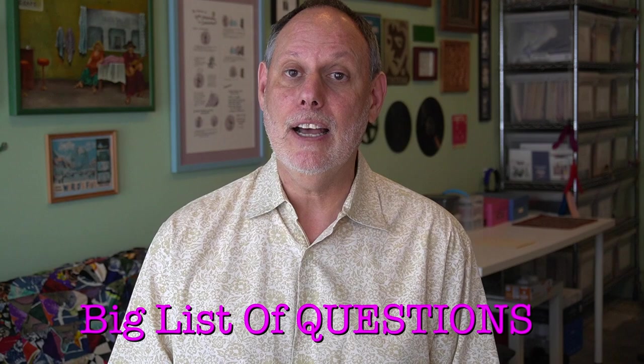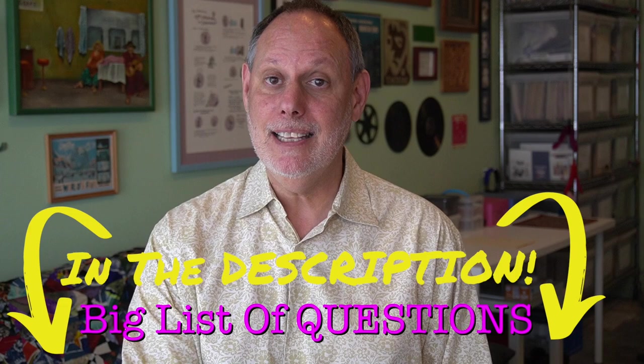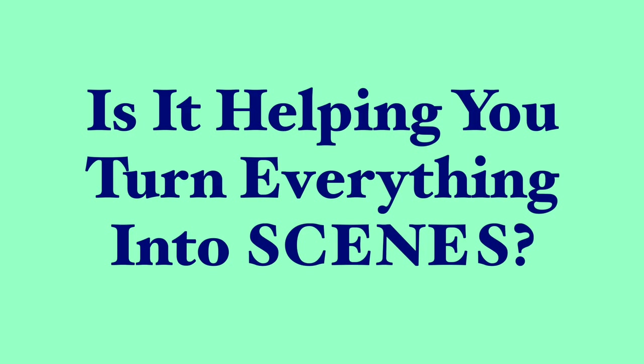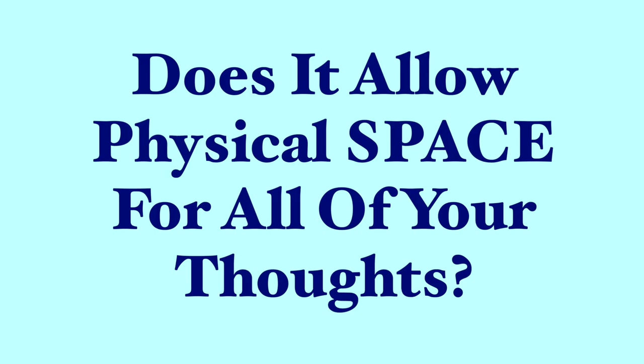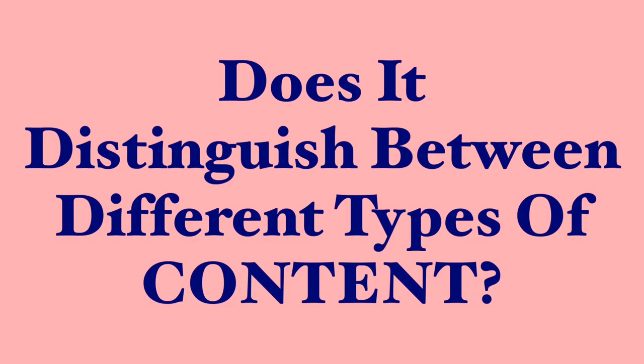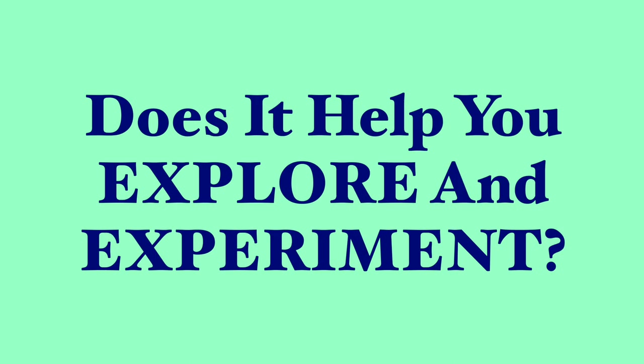To help with that, I have made a big list of questions that you can ask yourself to see if an outline system is helping you. I'm going to run through it now, but I also put it in the description so you don't have to take notes. Here we go. Is it helping you turn everything into scenes? Is it showing you what the action is and who's taking it? Is it making each idea more specific and concrete?